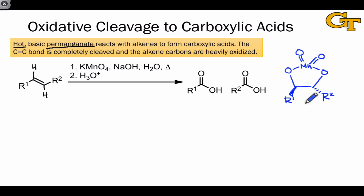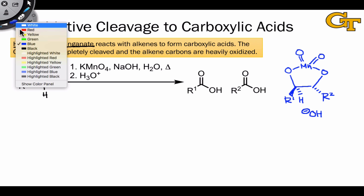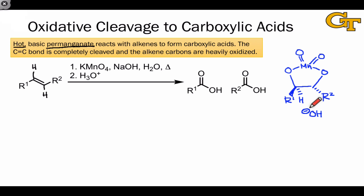As in 1,2-dihydroxylation, the key intermediate here is also a manganate ester. However, the hot reaction conditions encourage a different path rather than substitution of each of the carbon-oxygen bonds with hydroxide. At high temperatures, hydroxide engages in elimination in the manganate ester. This elementary step and further steps like this establish the double bonds and ultimately the OH groups at the carbons of the alkene.